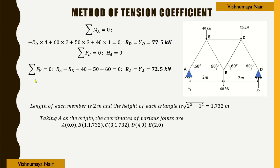Considering equilibrium of forces along the y direction: RA + RD − 60 − 40 − 50 = 0. Since RD = 77.5 kN, RA = YA = 40 + 50 + 60 − 77.5 = 72.5 kN.